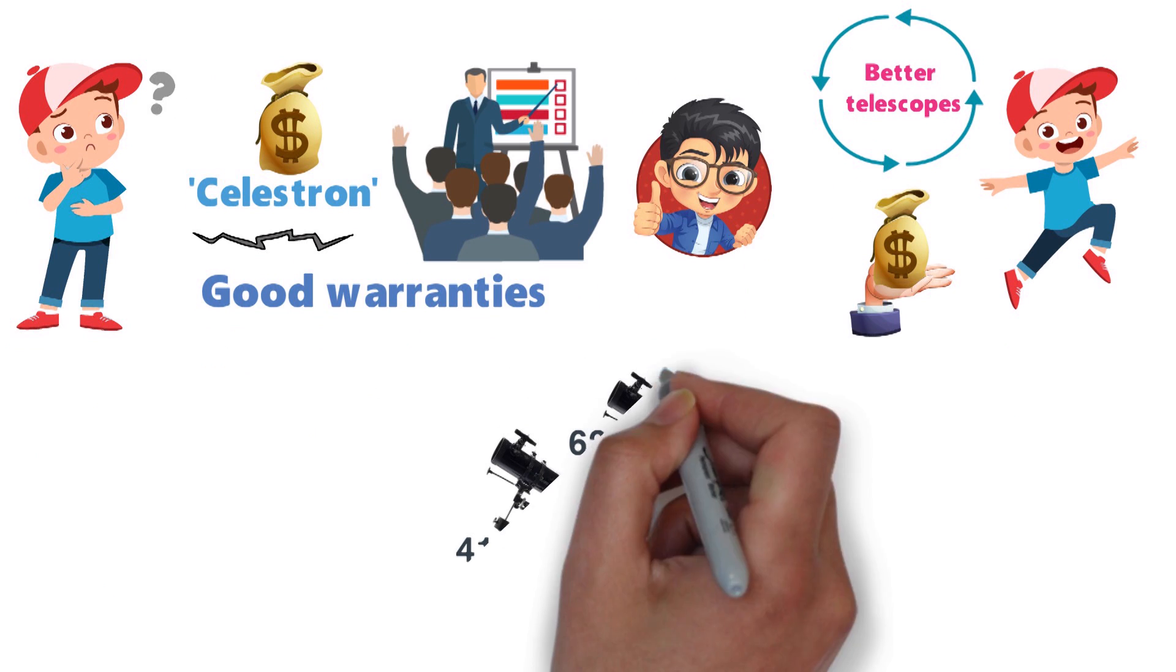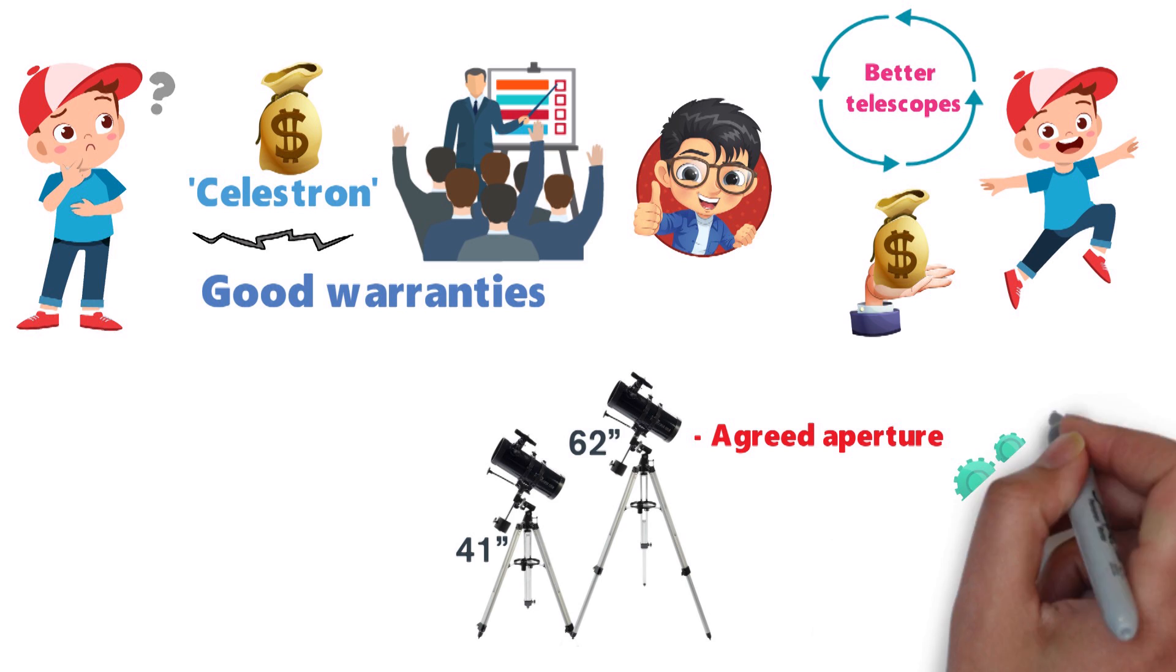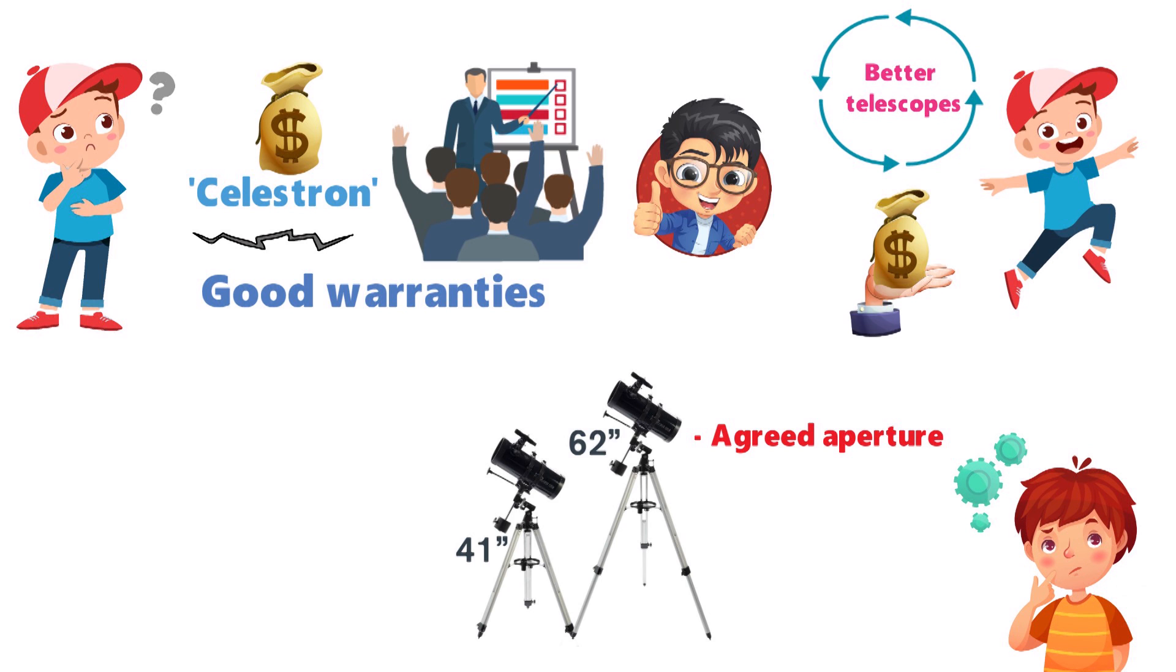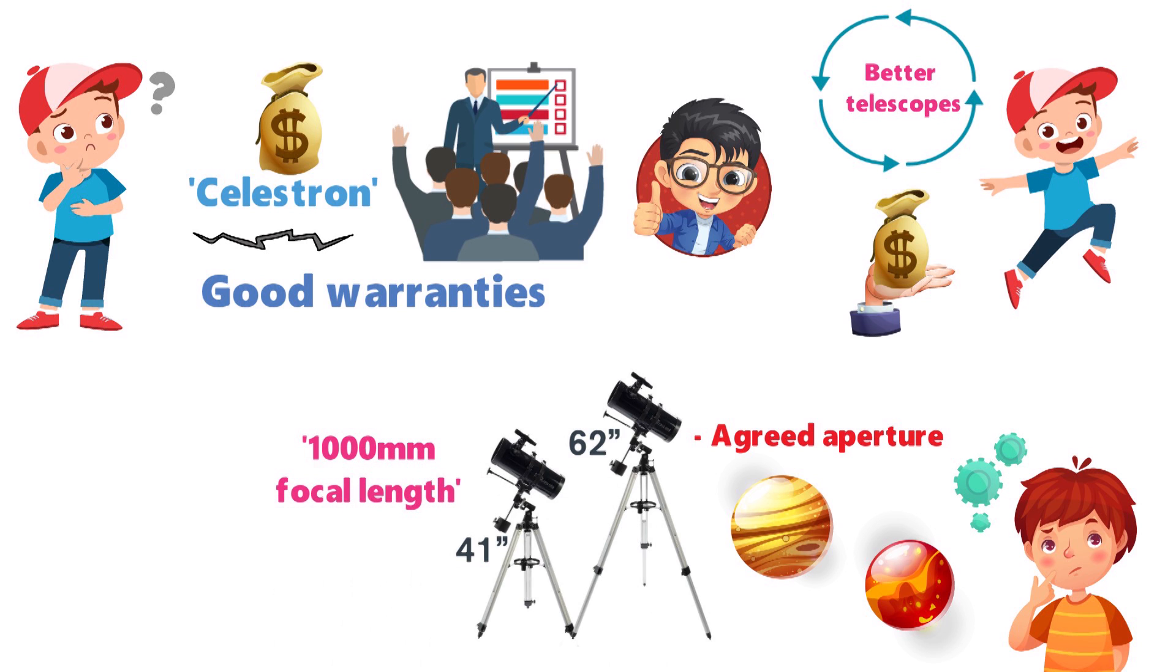The aperture of the PowerSeeker is 127mm. This seems to be the agreed aperture that you'll need if you want to start taking your astronomy a little more seriously and start seeing more than just the moon and faint planets. It also has a focal length of 1000mm, which is another important factor to consider if you're purchasing a new telescope.